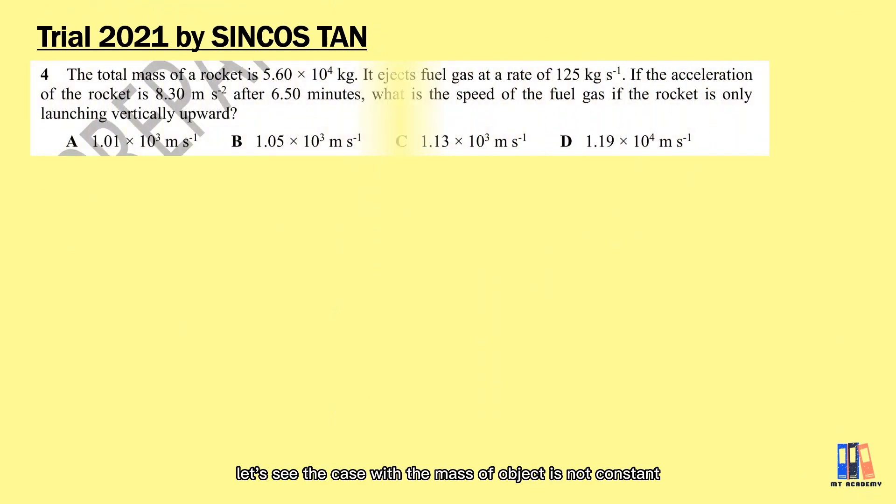And now, let's see the case where the mass of object is not constant. There is one good example from the trial paper prepared by Sincos Tan in 2021. You can have a look at the question here. The total mass of the rocket is 56,000 kg, and it ejects fuel gas at a rate of 125 kg/s. We are given with the acceleration of 8.3 m/s², but notice that it specifies the value of the acceleration is at a time of 6.5 minutes or 390 seconds.